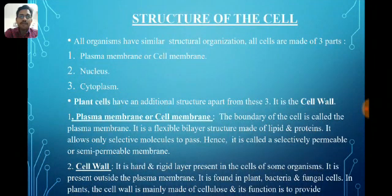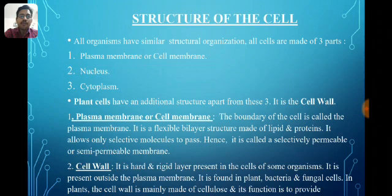All organisms have similar structural organization. All cells are made up of three parts: plasma membrane (also called cell membrane), nucleus, and cytoplasm. Plant cells have an additional structure — the cell wall. In plant cells, in addition to the plasma membrane, there is an outer cover of cell wall.